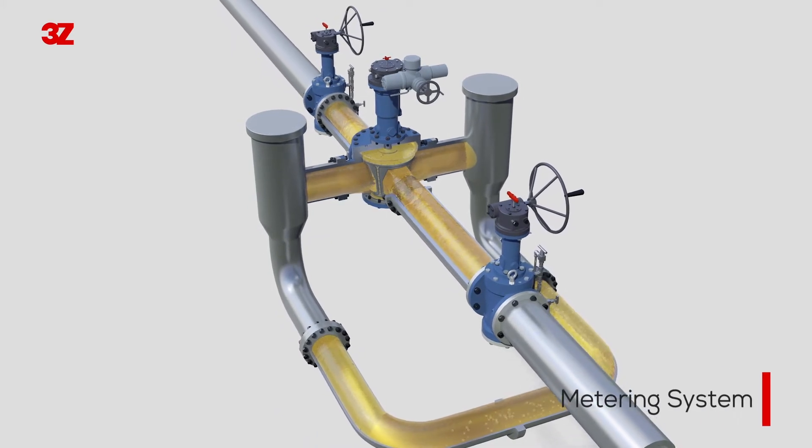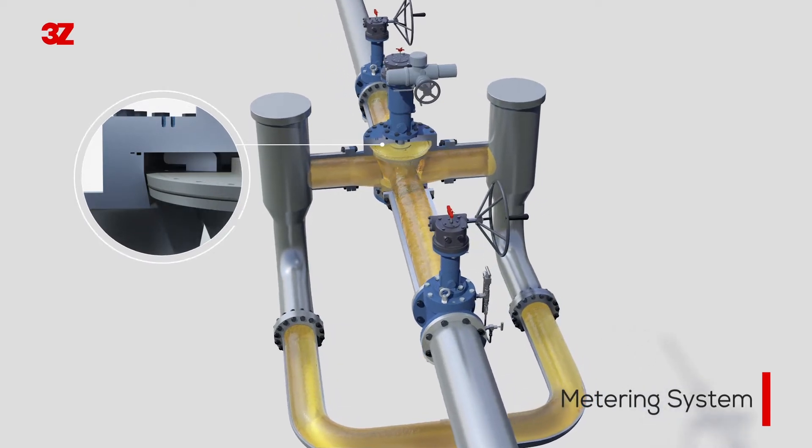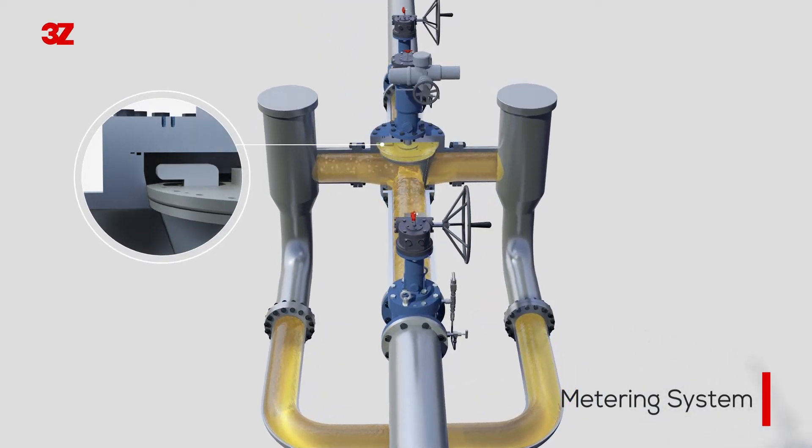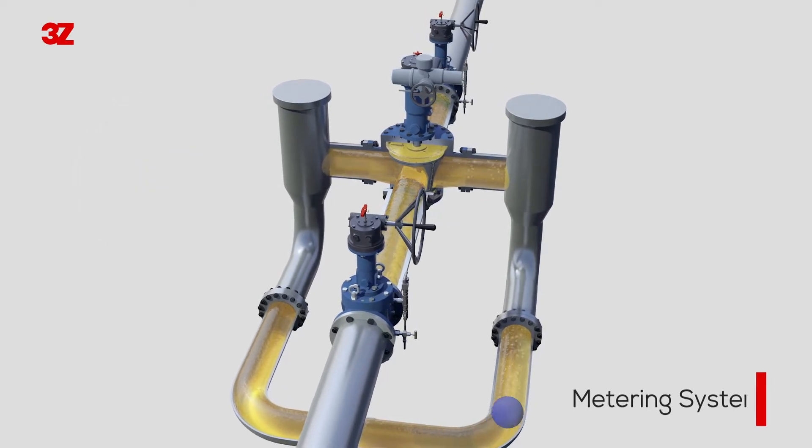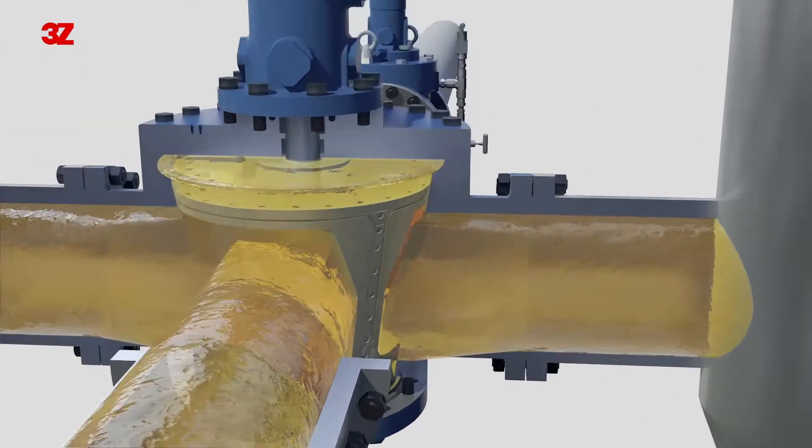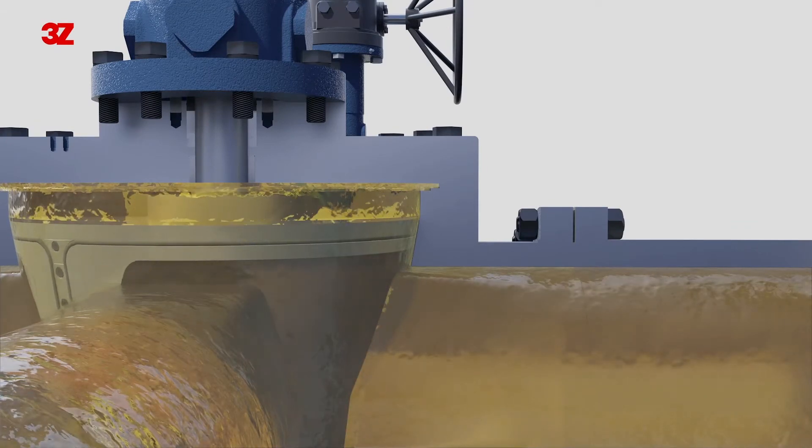The soft seal is in contact with the body while the valve is in normal position, but there is no friction during operation because the soft seal and body are not in contact with each other. As the soft seal and the body are in contact with each other again only after the operation is completed, this minimizes the abrasion of the soft seal.